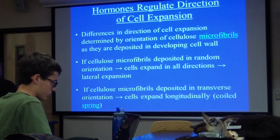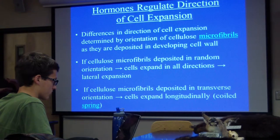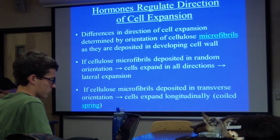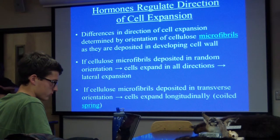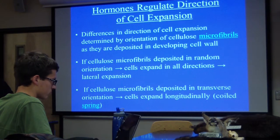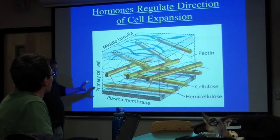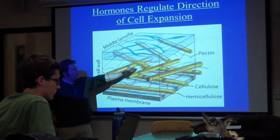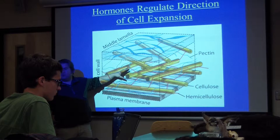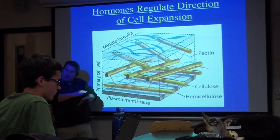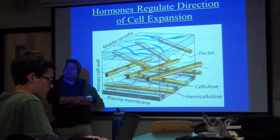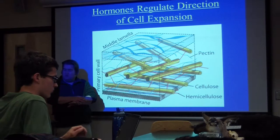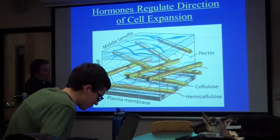That one makes a lot of sense: if you've got these microfibrils stacked like this and they're sort of compressed, when that thing expands it's going to be like a coiled spring expanding upward. Here's the plasma membrane, here's the cell wall, and here are the cellulose microfibrils — I'll draw little cigars in my picture. Which way those things are oriented is going to determine the direction of cell expansion, which has huge impacts for the shape of the cell and plant organs.